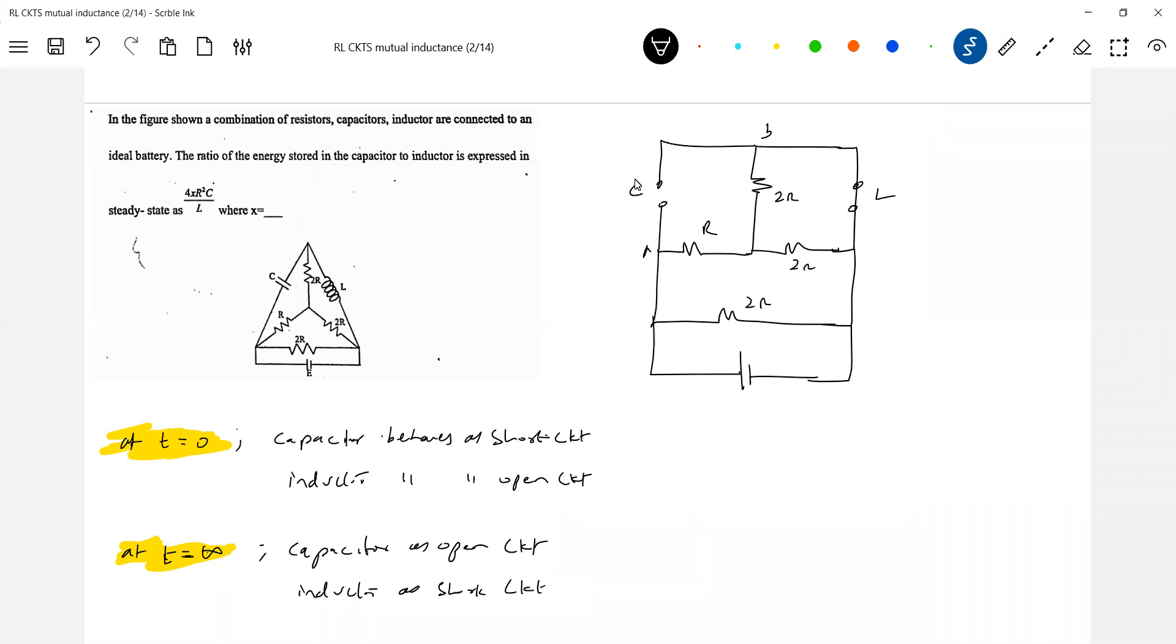We'll get the steady state charge and what current flows through this branch here. That will be the current through the Inductor. Able to make it out. That's the simplest idea. So here Capacitor is there. Here an Inductor is present.